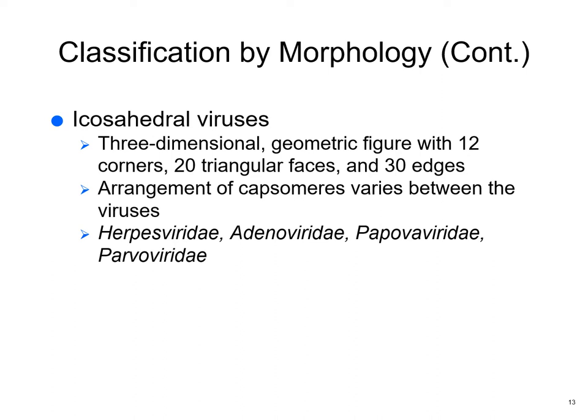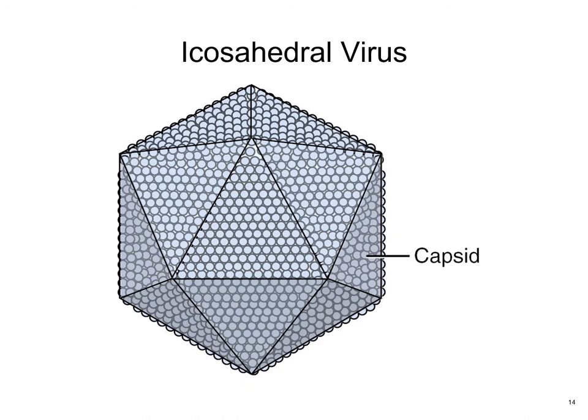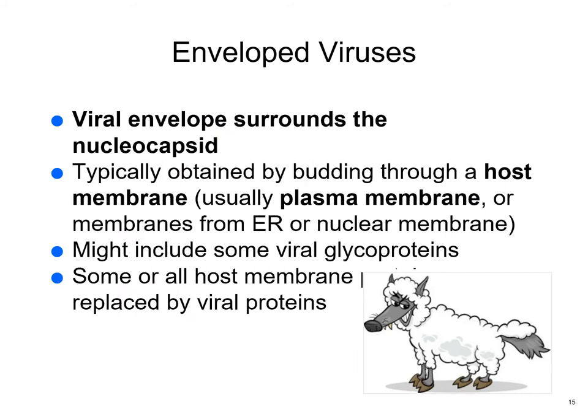Icosahedral viruses are multidimensional. Examples include herpes viruses, adenoviruses, Papoviridae, and Parvoviridae. Looking at the picture, you can see all the different sides — it's a cool looking structure, almost like something you'd want to hang on a tree.